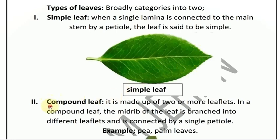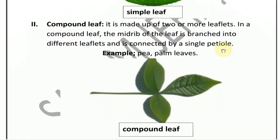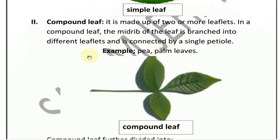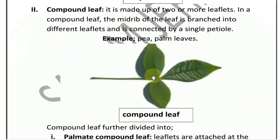Second is compound leaf, where the leaf is divided into two or more leaflets. If you have a pea plant or palm leaves, you can see the leaflets are divided.